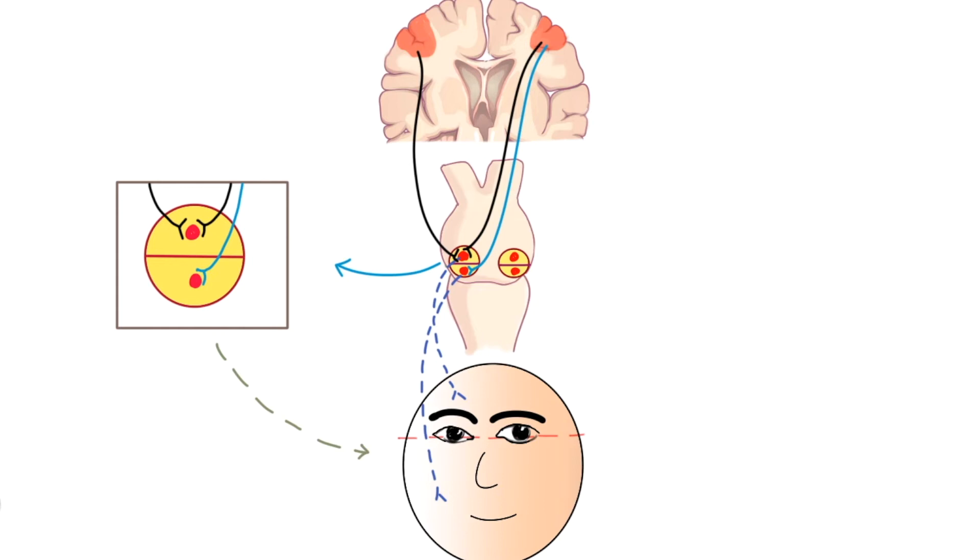Now, suppose there is an upper motor neuron lesion. So what would be the clinical findings? In this case, you will see paralysis of the contralateral lower facial musculature.